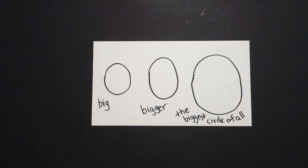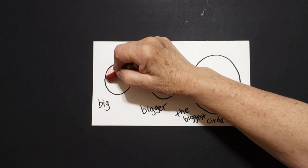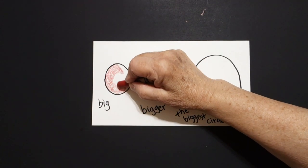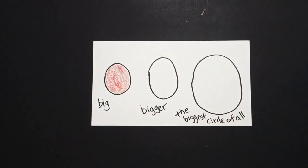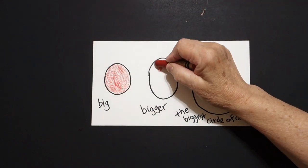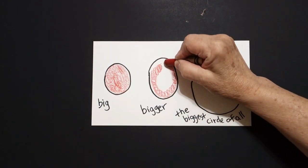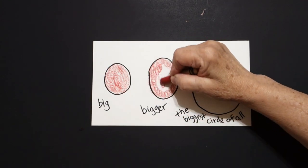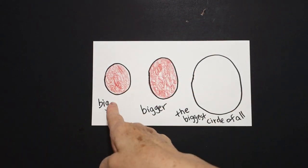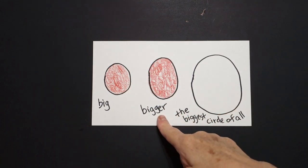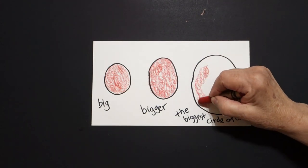Let's see how we're going to color this in. Okay, pick your favorite color. I'm going to use red and I'm going to color in my big circle. But once I color that in, I think to myself, I'm going to color in the bigger circle also red. And I'm doing a loop-de-loop so I don't hurt my fingers. I'm trying to stay in the lines. So this is a big circle, this is a bigger circle. But now I'm going to color with red the biggest circle of all.